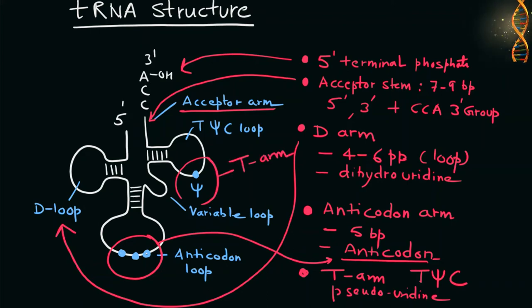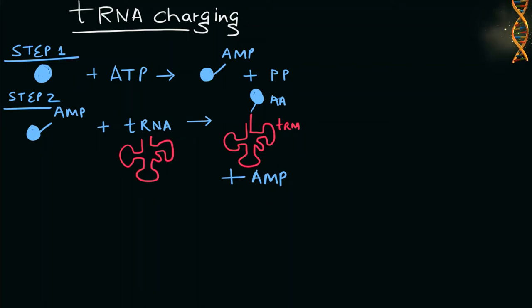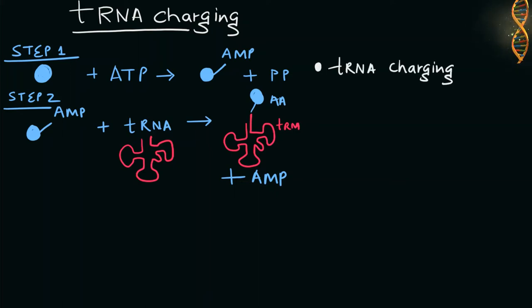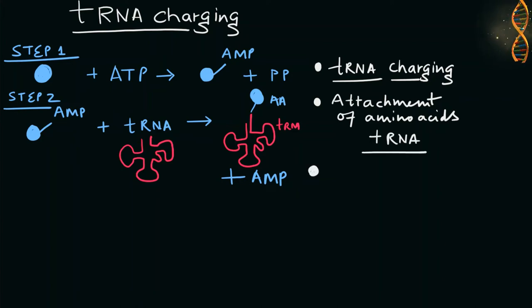Since we understood what is the basic function of tRNA molecule and the structure of a tRNA molecule, let's jump on to the final topic that is tRNA charging or amino acid activation. Amino acid activation, also known as aminoacylation or tRNA charging, refers to the attachment of an amino acid to its transfer RNA molecule. In the first step, aminoacyl-tRNA synthetase binds adenosine triphosphate molecule to amino acid and a pyrophosphate molecule is released.